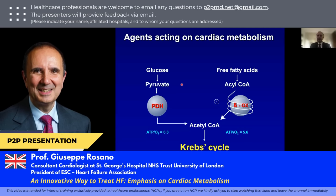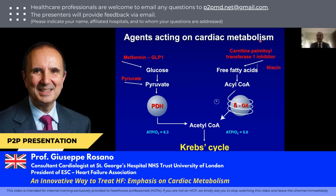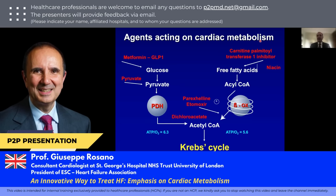We can act on cardiac metabolism more specifically using modulators of cardiac metabolism. One way is to increase glucose uptake, like metformin and GLP-1 receptor agonists, or with infusion of pyruvate into the coronary arteries, which has been shown to increase contractility. Another possibility is to use CPT (carnitine palmitoyltransferase) inhibitors or niacin, but these have not been shown to be effective. It is also possible to act at the level of acetyl-coenzyme A with dichloroacetate or with perhexiline, but perhexiline is very toxic and licensed only in Canada where it is basically not used.